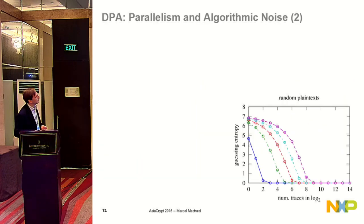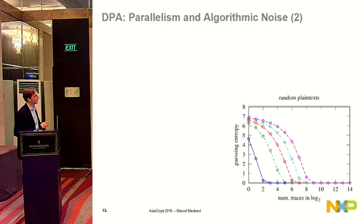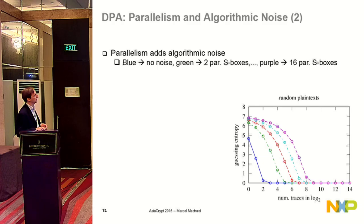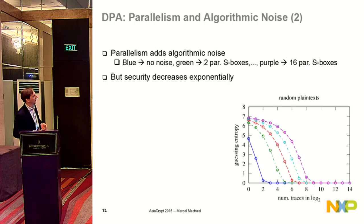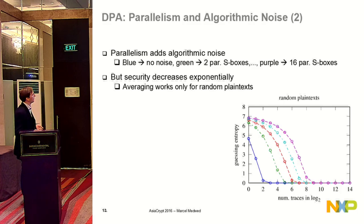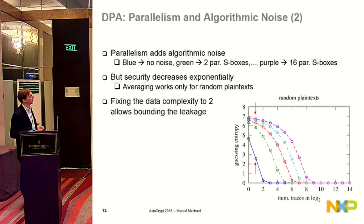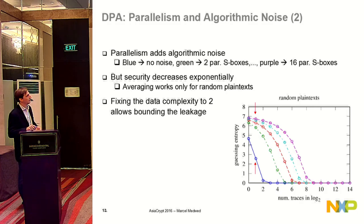In our attack simulations, we always use noise-free Hamming weight leakage and perfectly computed templates. You can see that parallelism increases the algorithmic noise and therefore we need more traces. On the y-axis is the guessing entropy of a single key byte in log scale; on the x-axis is the number of traces also in log scale. The purple curve refers to a fully parallel AES implementation; the blue one has no algorithmic noise at all. Security decreases exponentially with the number of traces. If you could fix the number of traces an adversary can get to two, we have bounded leakage — which is insufficient with no algorithmic noise, but with enough algorithmic noise this is already something we can work with.